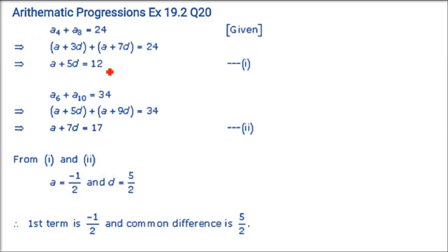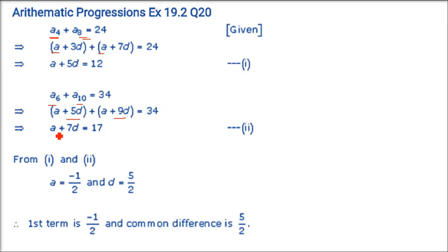The sum of the 4th and 8th terms of an AP is 24, and the sum of the 6th and 10th terms is 34. Find the first term and common difference. A4 + A8: (a + 3d) + (a + 7d) equals 24, so 2a + 10d equals 24, giving a + 5d equals 12. A6 + A10: (a + 5d) + (a + 9d) equals 34, so 2a + 14d equals 34, giving a + 7d equals 17. Subtracting: 2d equals 5, so d equals 5/2.